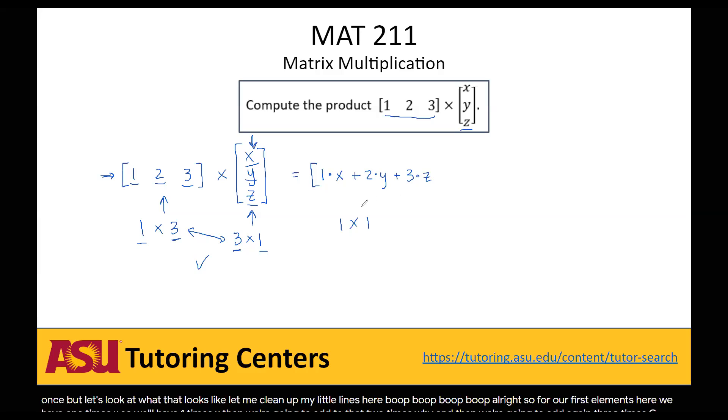So for each row and column pair, we multiply the corresponding elements and then sum up all of those different element products.